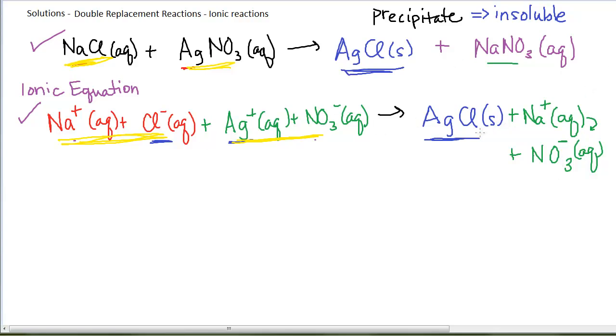The second reaction, the ionic equation, has taken everyone who is aqueous in the top reaction and split them up into their ions. This is balanced already. The top reaction is balanced. The second reaction is balanced. We'll do one that's a little harder to balance in a second.